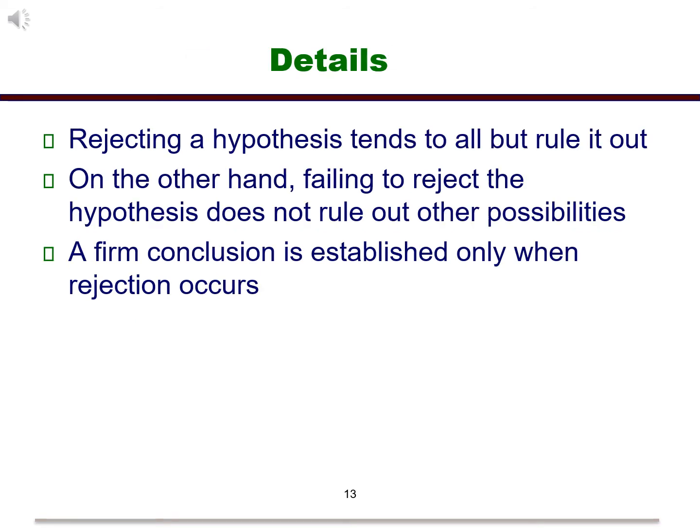Let's look at some details. If we reject a hypothesis, it is basically ruled out as a possibility. On the other hand, failing to reject the hypothesis does not rule out other possibilities. Because we can never conclude equality from a hypothesis test, a firm conclusion is established only when a rejection occurs.